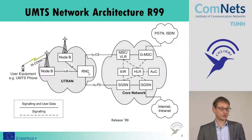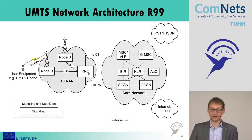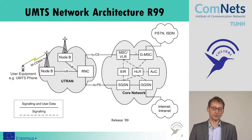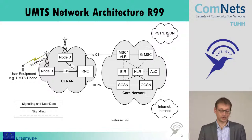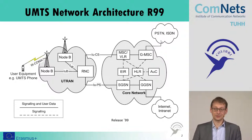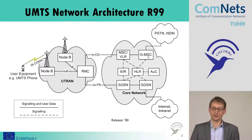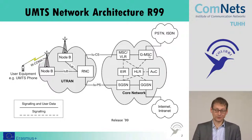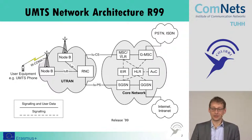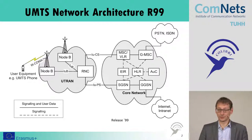We can see the history from the GSM network. We have two parts in the core network. One part is for the phone network — for the mobile voice services and also for circuit-switched services. Here we have a gateway which is the mobile switching center. We have several of them, and one interconnects to the radio network controller, and then to the front end to the base station and the user equipment.